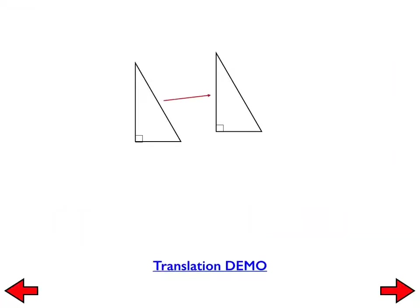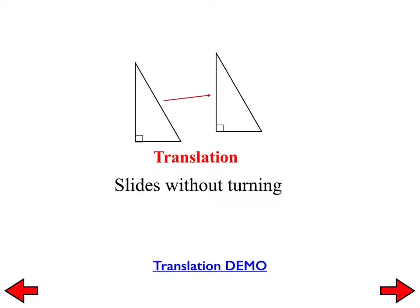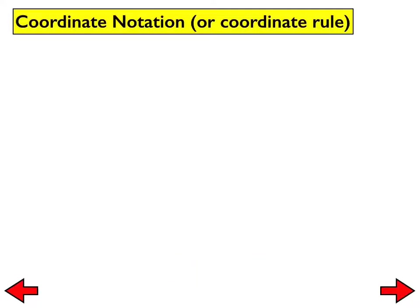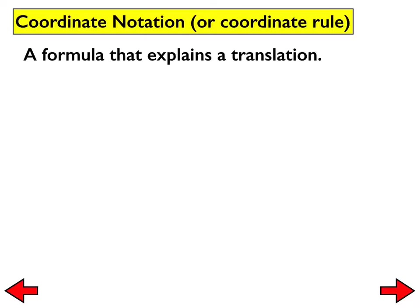Translation is where the shape is sliding without turning. A coordinate notation or coordinate rule is a formula that explains a translation. They all look like this: (x, y) translates to (x plus a number or x minus a number, comma, y plus a number or y minus a number). That's what all of our coordinate rules will look like.